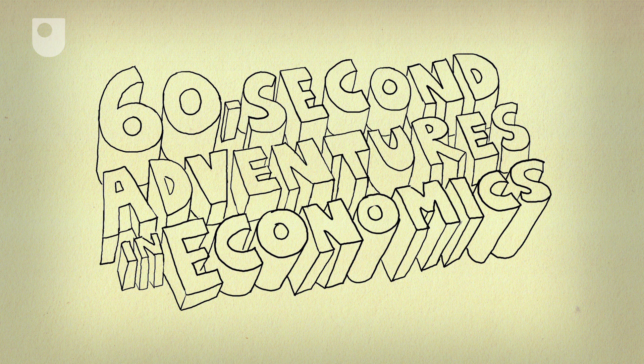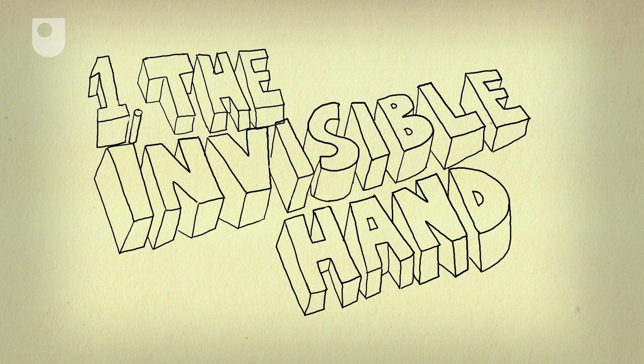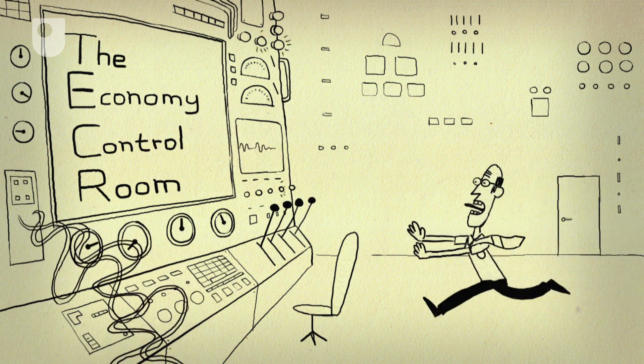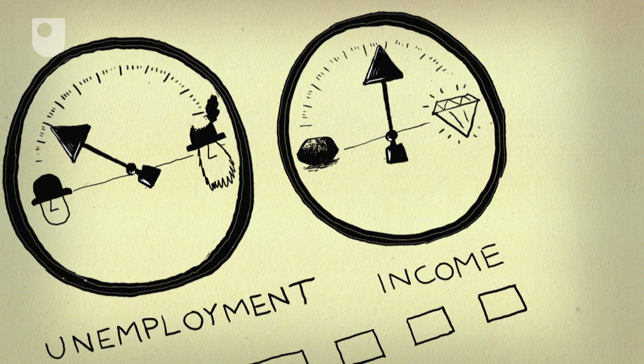60 Second Adventures in Economics Number 1. The Invisible Hand. An economy is a tricky thing to control and governments are always trying to figure out how to do it.